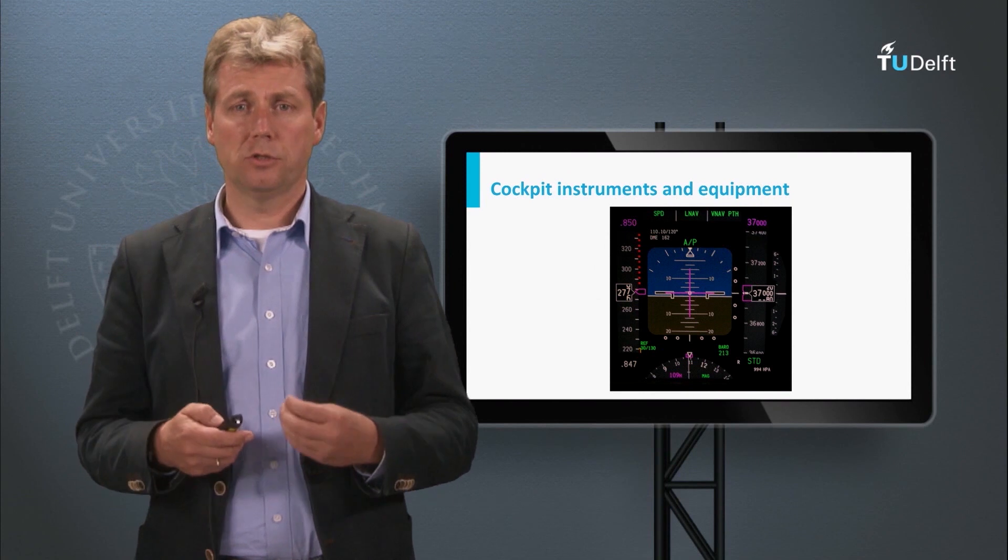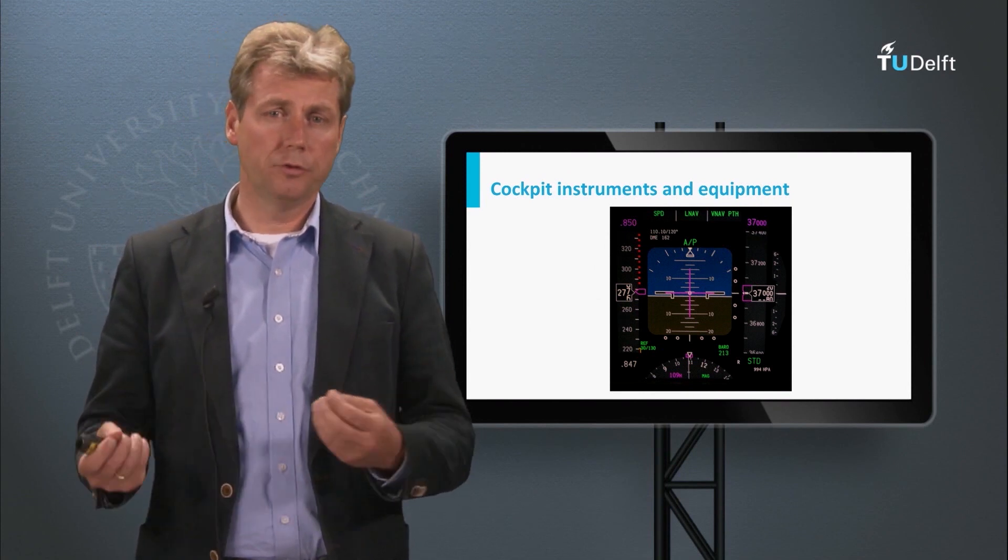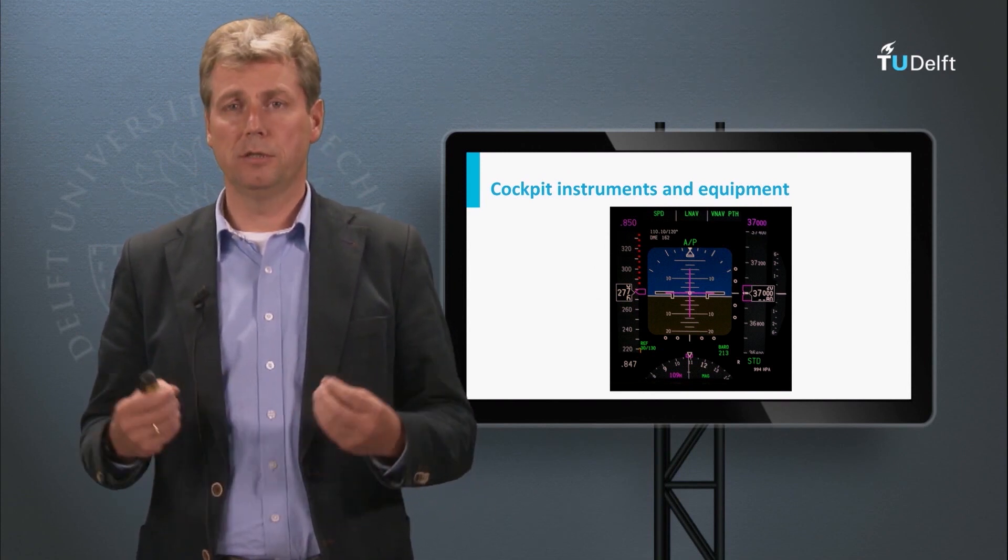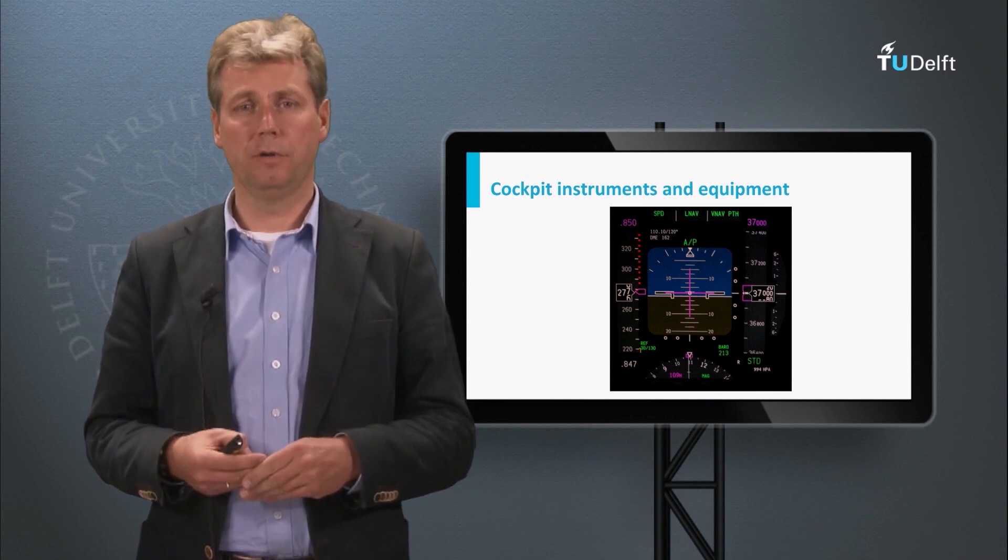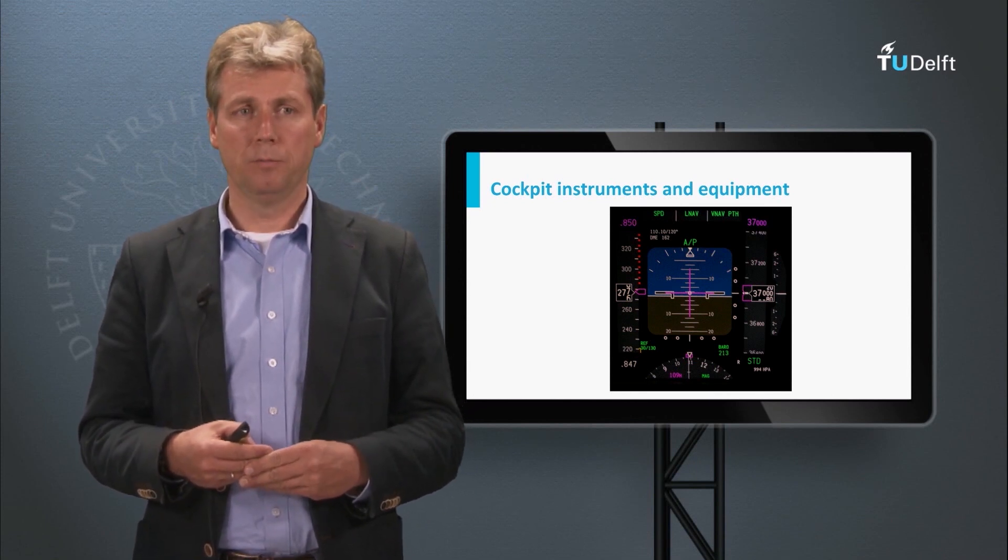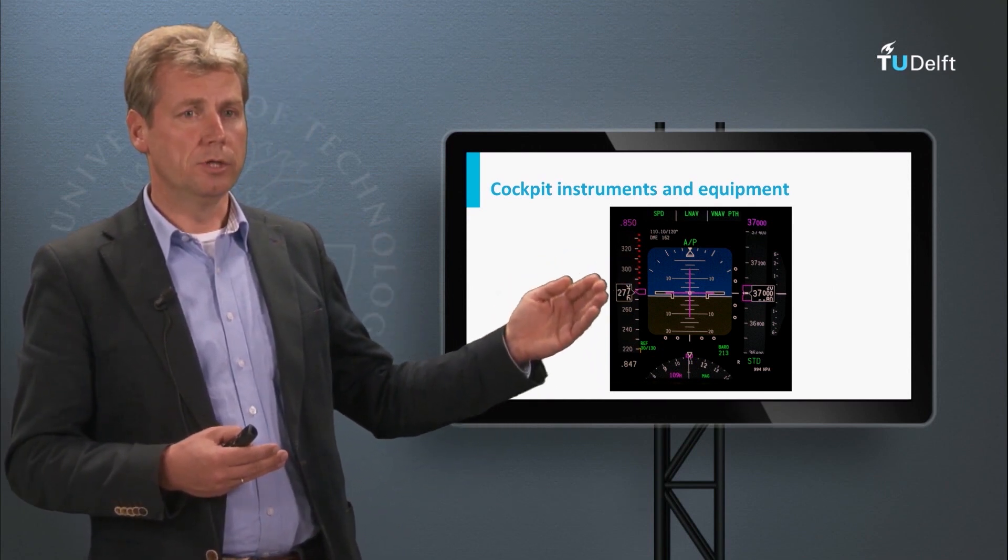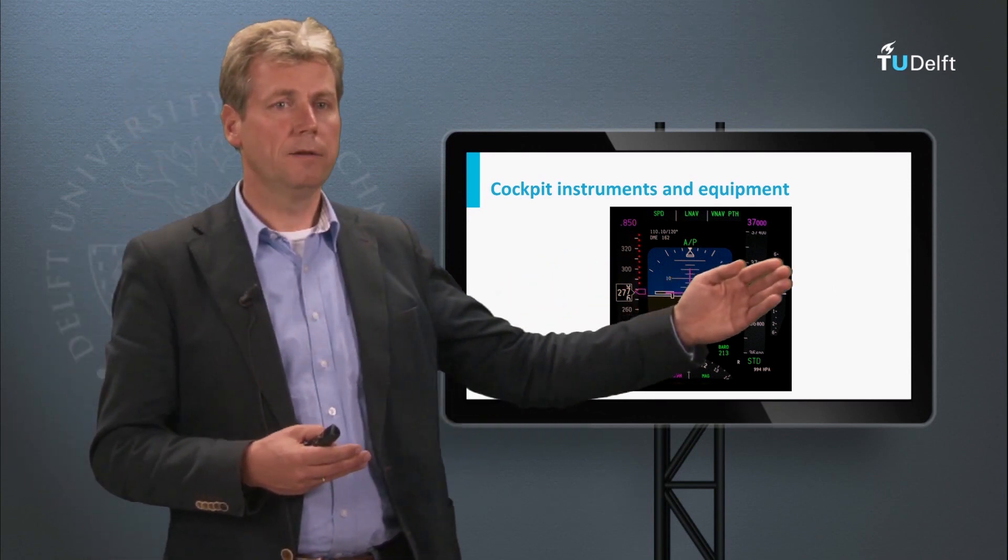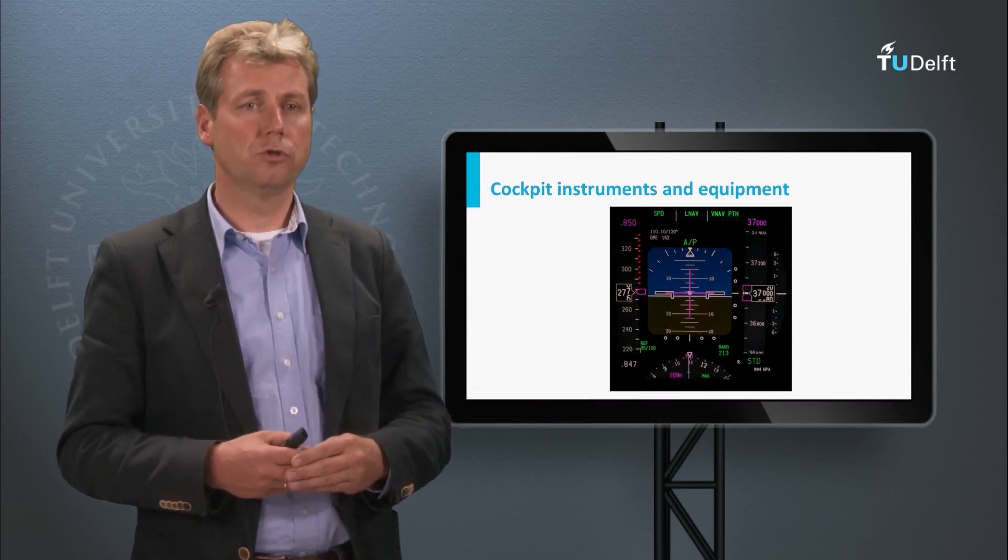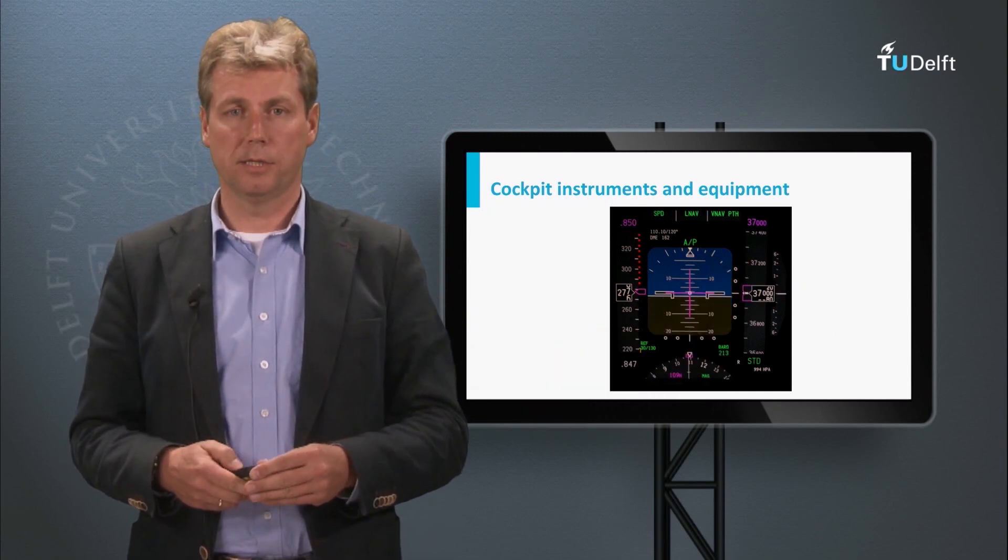The instruments show altitude, speed, position, heading, and we will look at a few of these parameters. We will start off with the primary flight display, which shows on this side the speed and on the other side the altitude, and this is also the order in which we will discuss them.